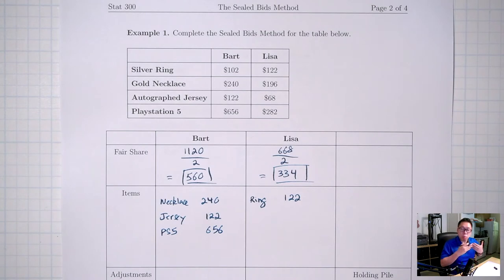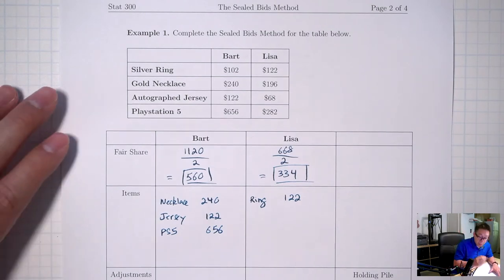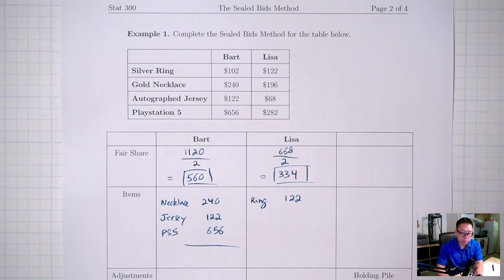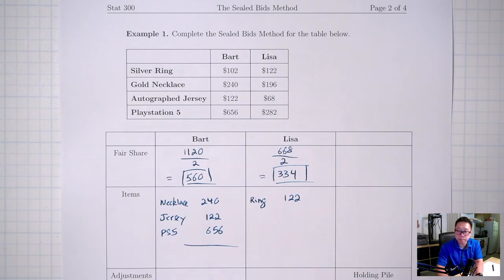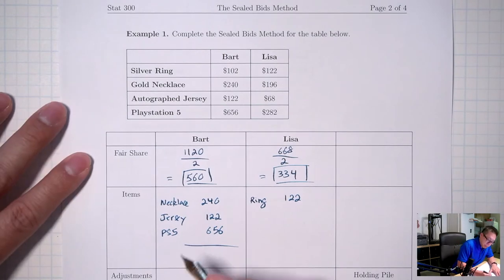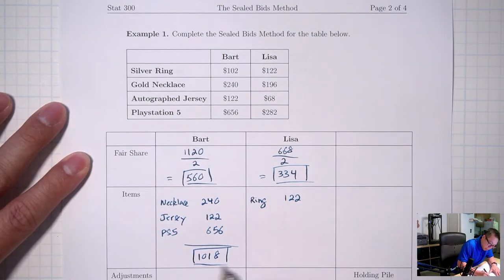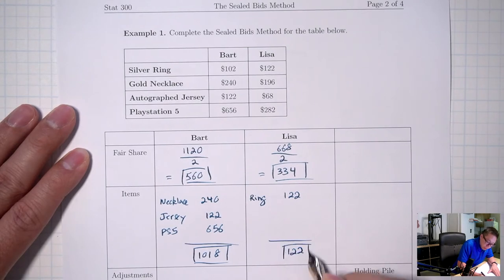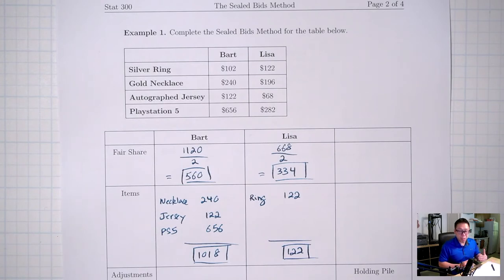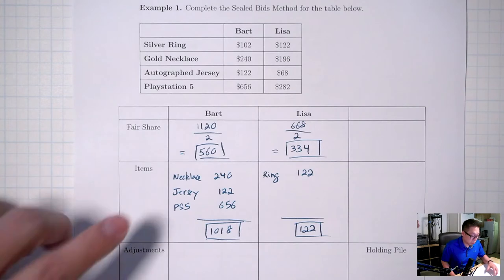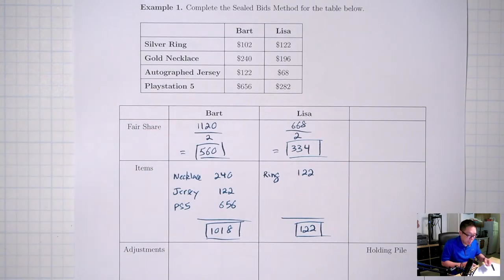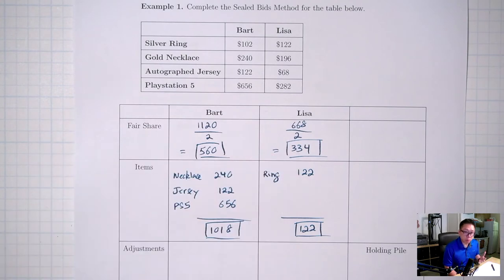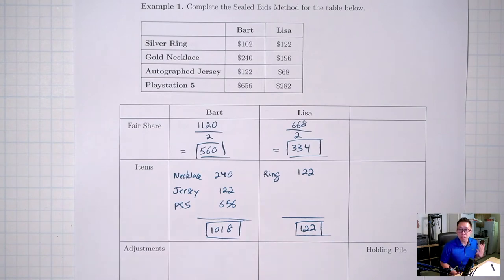Now we total the value of all items each person received. Bart got the necklace, jersey, and PS5: 240 + 122 + 656 = $1,018. Lisa only got the ring: $122 worth of items. Obviously if we stop here it's not fair — Bart deserves $560 but got $1,018, and Lisa deserves $334 but only got $122.